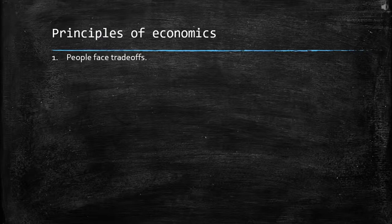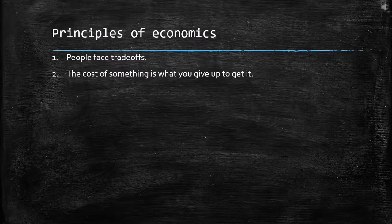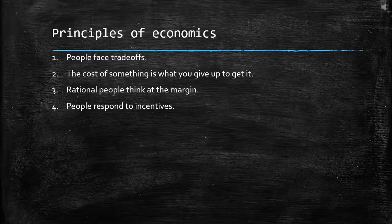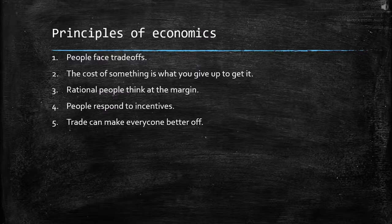First, people face trade-offs. Second, the cost of something is what you give up to get it. Third, rational people think at the margin. Fourth, people respond to incentives. Fifth, trade can make everyone better off.